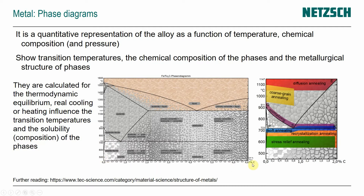Here you see temperature on the y-axis, and on the x-axis the carbon content of the material — it's a phase diagram of an iron material. Depending on the carbon content, as the material is cooling it goes through different phases and forms different structures. This depiction also gives you an idea of the grain structure and size, and shows these transition temperatures that describe the metallurgical structure of the phases — for example, austenite formation while still liquid, or when it's completely austenite.